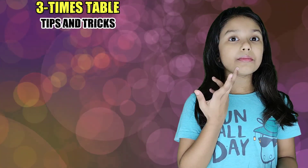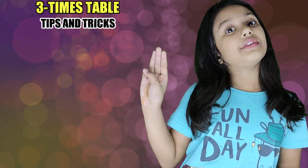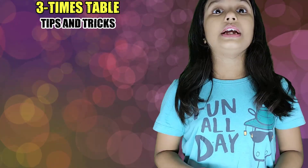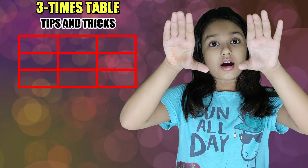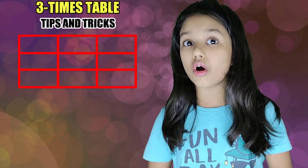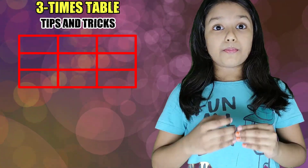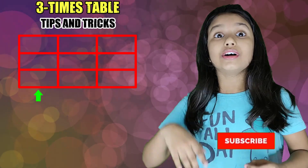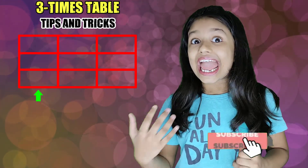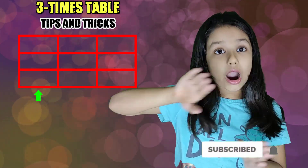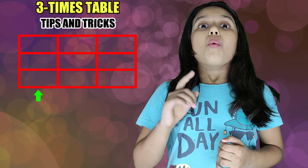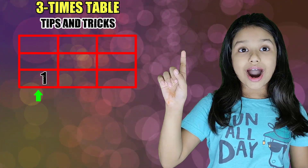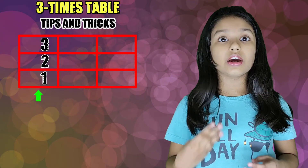Now I tell you how to memorize the three times table. Okay, let's see. First, we draw three columns and three rows. Now we put, bottom to top, one, two, nine and zero out of the box.